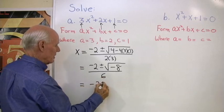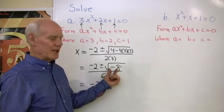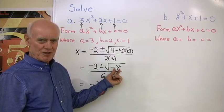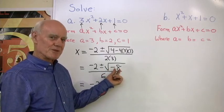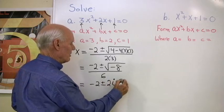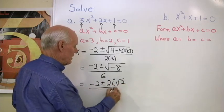That's negative 2 plus or minus. Okay, the negative sign comes out as i. 8 is 4 times 2, so the square root of 4 comes out as 2. So we have 2i square root 2, all divided by 6.